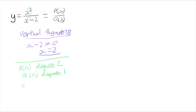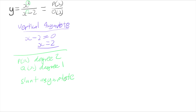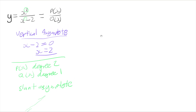So I have a slant asymptote, also called an oblique asymptote, in this function. What that means is that as x approaches a really big number or a really big negative number, my function actually approaches some linear function, which will be an asymptote — it'll approach that line but never quite reach it. All I've got to do is work out that equation by working out the division that is actually going on here, dividing these two polynomials.